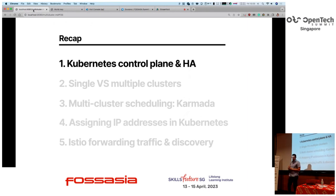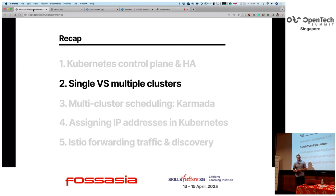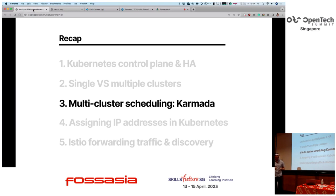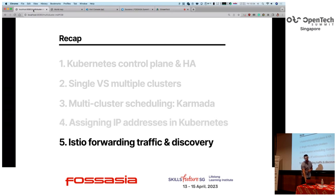To wrap up: we looked at how Kubernetes works and how scheduling works in Karmada — how policies can spread workloads across clusters. We explored different options for deploying Kubernetes: a single control plane with multiple nodes in multiple regions versus the better approach of a single cluster per region. We had a look at Karmada — not the only tool; Argo CD is also a valid option for multi-cluster deployments. And we looked at how Istio shares IP addresses between clusters and how traffic is forwarded using gateways.